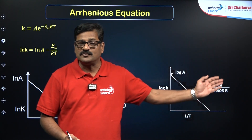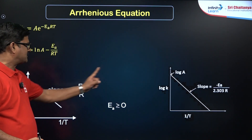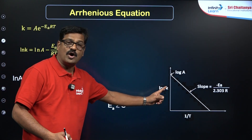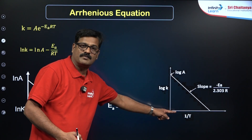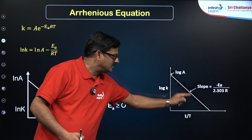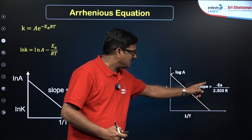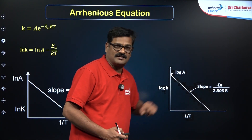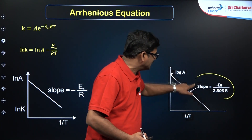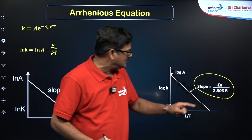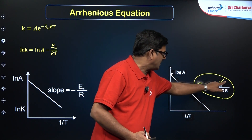In base-10 logarithm, a plot of log k versus 1/T also gives a straight line with negative slope equal to −Ea/(2.303R), and the intercept is log A. A key catch point: in the examination the slope will be given and you will be asked to calculate the activation energy Ea.